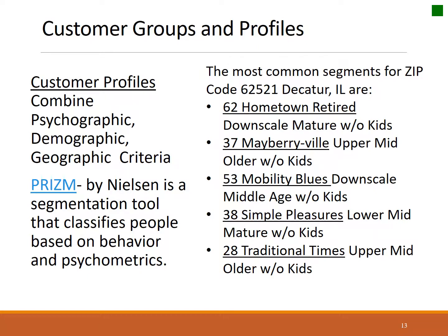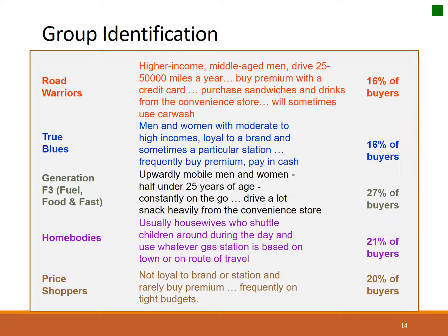Each one of these named categories describes a type of consumer. The Hometown Retired are downscale, mature individuals who do not have kids living with them. Mayberryvilles are upper-middle-class individuals who are older without kids. Each one of these profiles can be written into a paragraph to describe the consumer based on several different segmentation criteria. This is not uncommon — lots of companies do this.